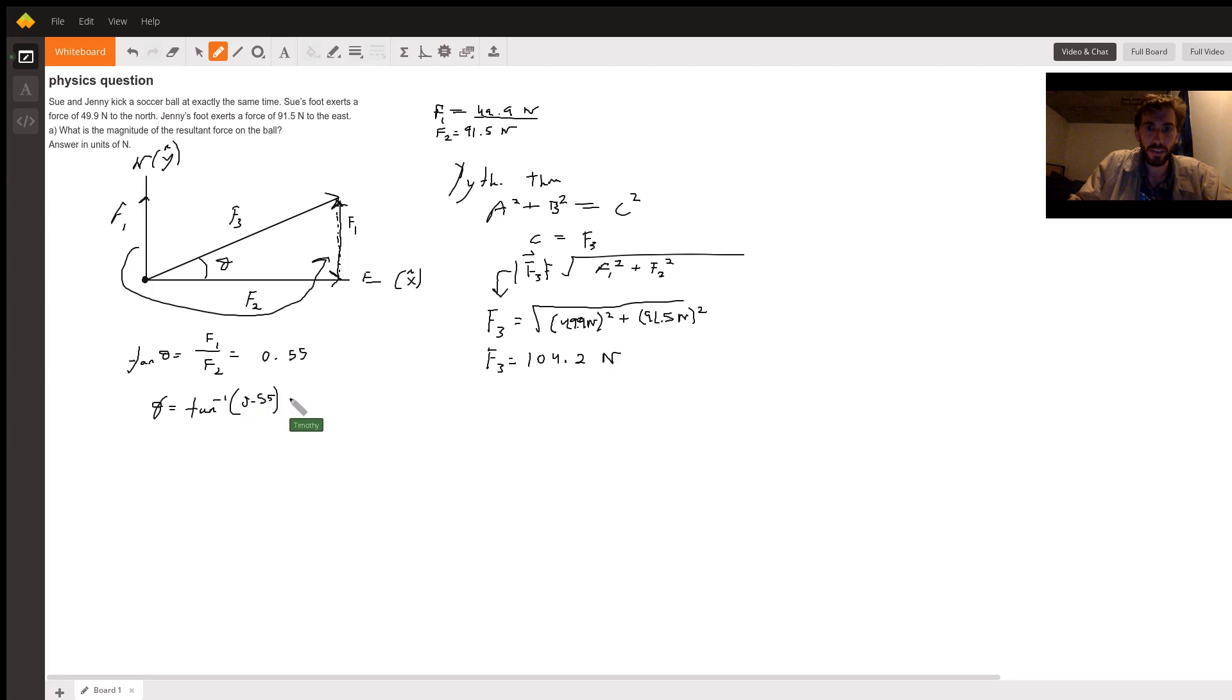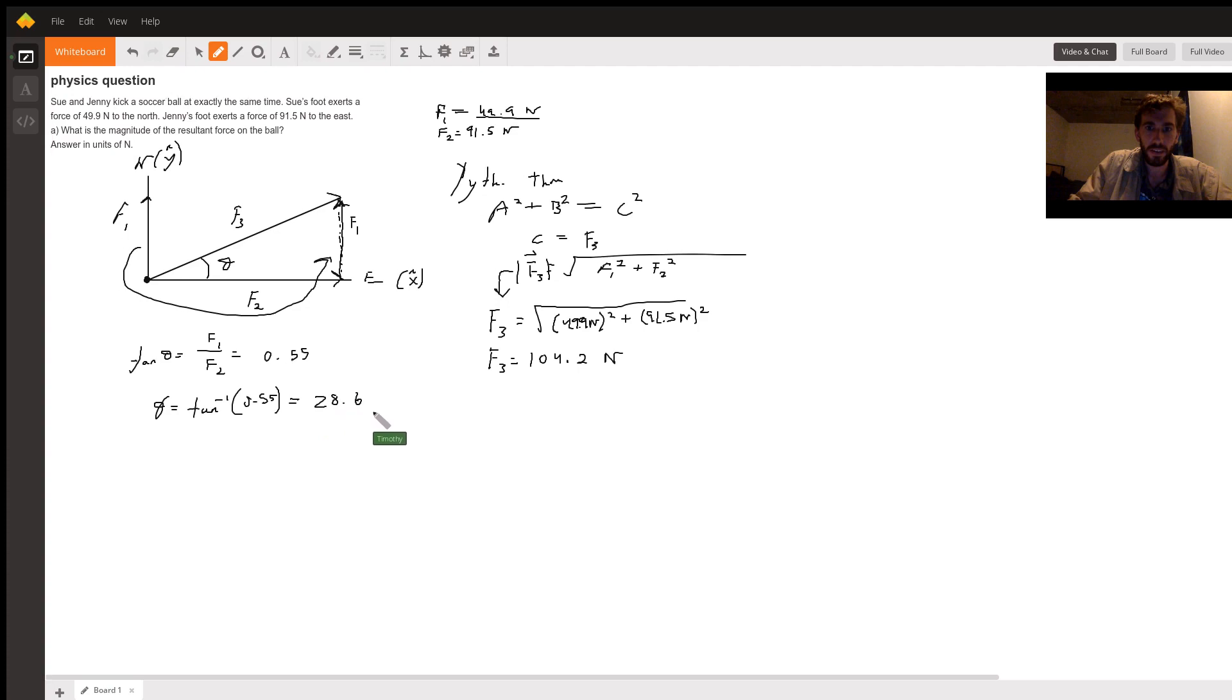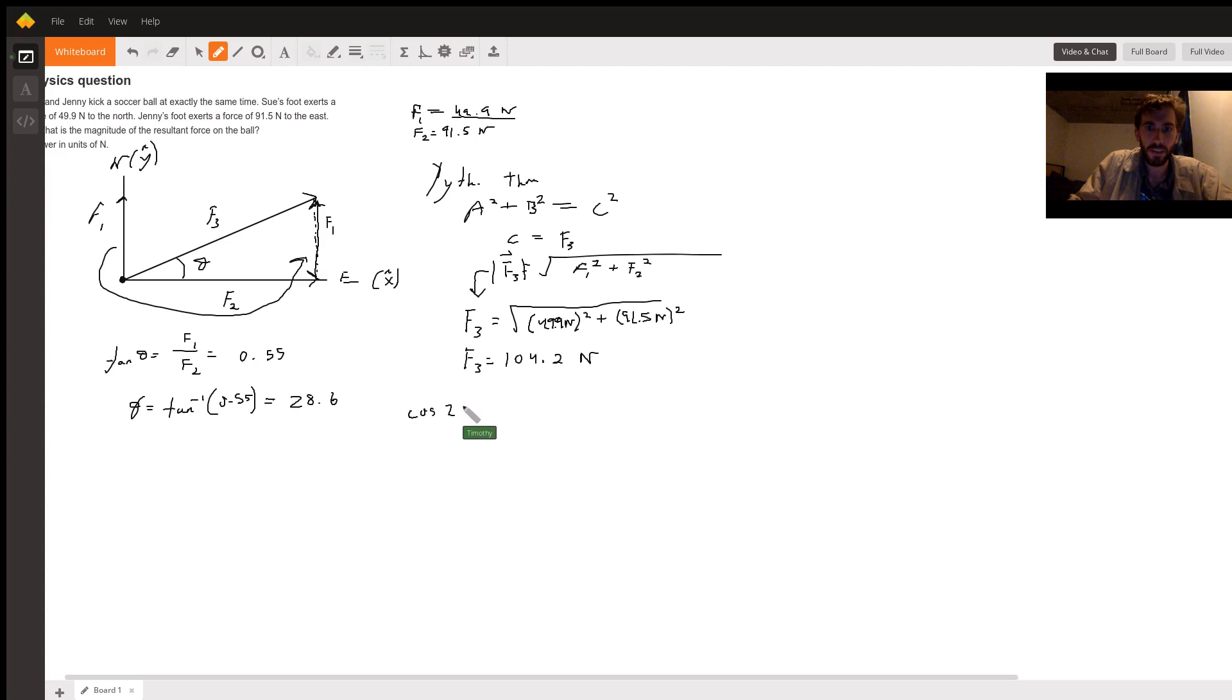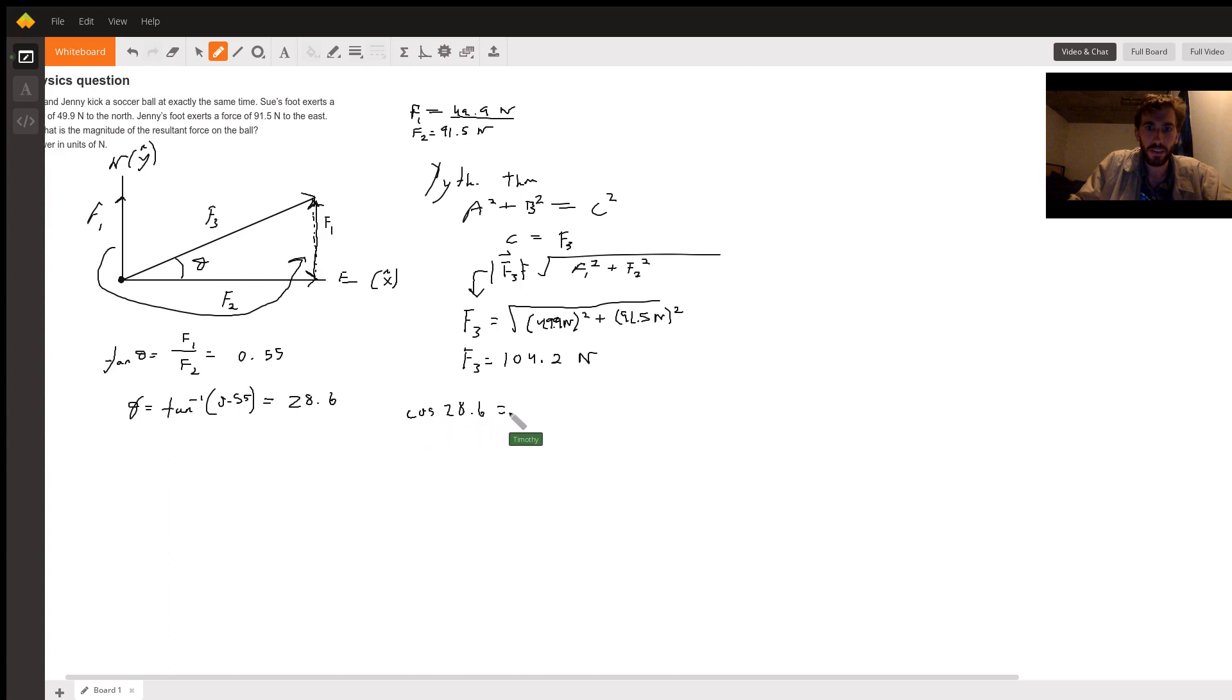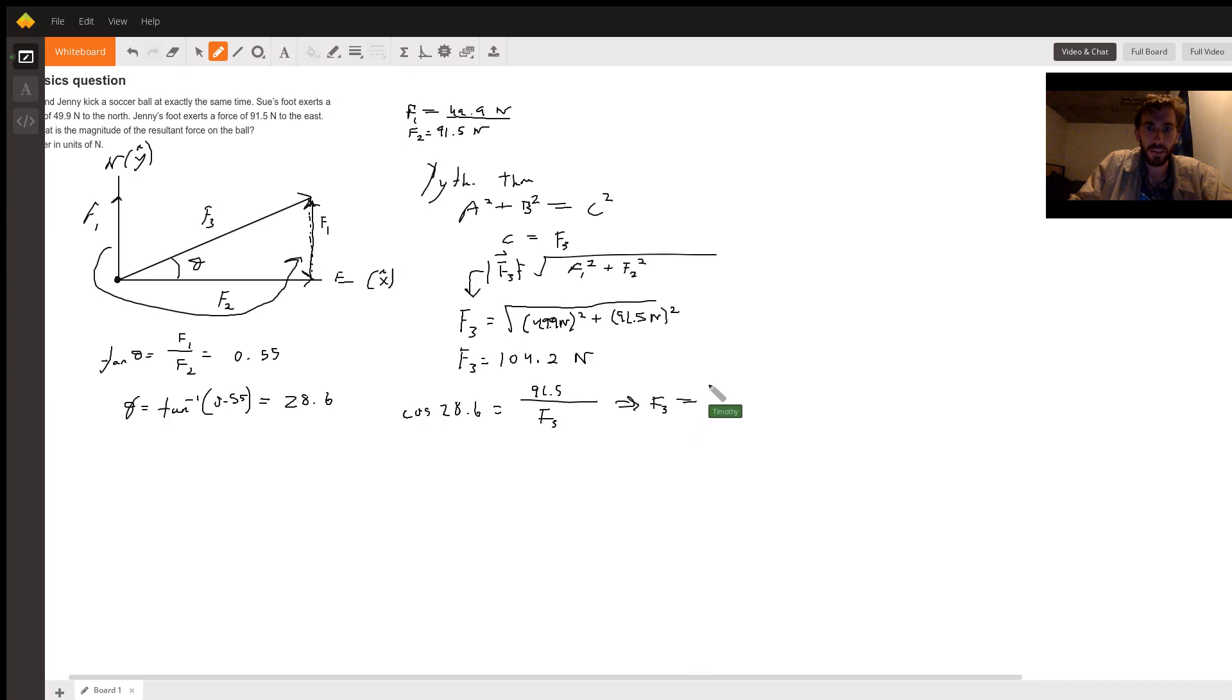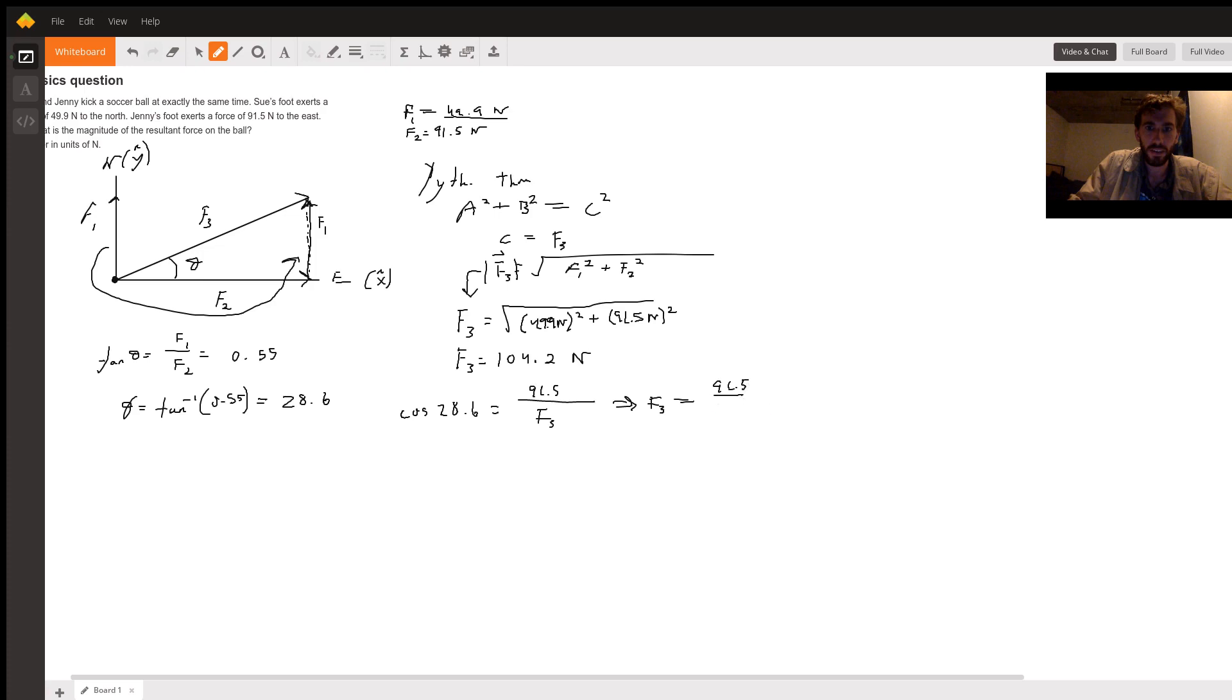To do arctan you pretty much need to use a calculator. There's not really any other way to do it. I'm getting theta is equal to 28.6 degrees. Now we can use this to verify this answer. If we say cosine of 28.6 is going to be equal to adjacent over hypotenuse, so adjacent is 91.5 divided by F3, we can basically just say F3 is going to be equal to 91.5 divided by cosine of 28.6, which is 0.878.